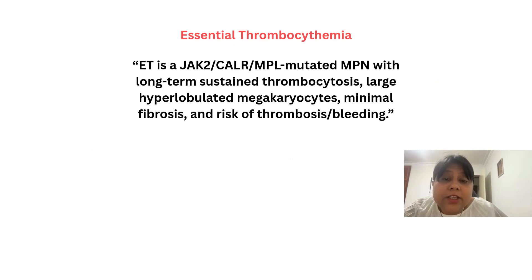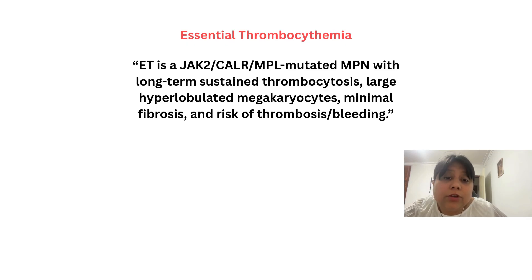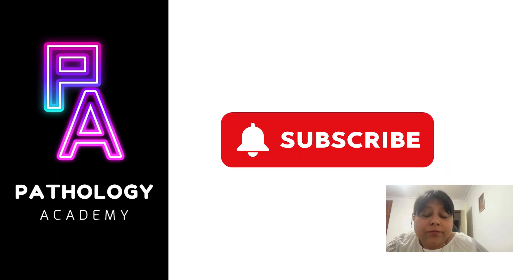To summarize: essential thrombocytemia is a JAK2-, CALR-, or MPL-mutated myeloproliferative neoplasm with long-term sustained thrombocytosis, large hyperlobulated megakaryocytes, minimal fibrosis, and risk of thrombosis or bleeding. I hope you will find this session useful. If you are liking my videos, don't forget to subscribe to my channel Pathology Academy. Thank you and bye for now.